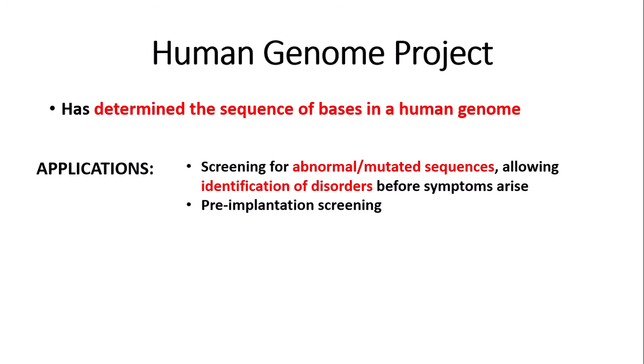Also, pre-implantation screening — which is similar to screening for abnormal or mutative sequences. For example, if you found out that an embryo contained an abnormal allele which meant that the baby was going to be born with a life-threatening disease, you could choose not to have that embryo implanted.